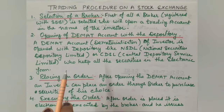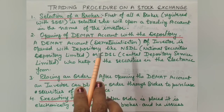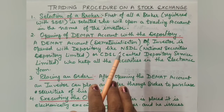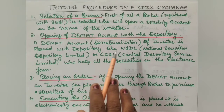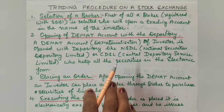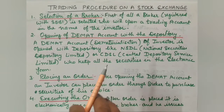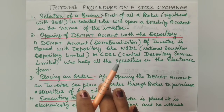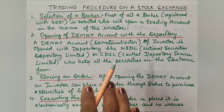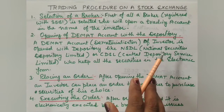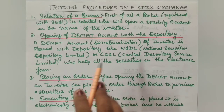Now we discuss the procedure of trading. First of all, selection of a broker. A broker is registered with SEBI and will open a trading account in the name of the investor. The broker can be an individual, a company, or an organization which works for brokerage. You can't invest directly — you have to approach the broker. He will open a trading account in your name and then the procedure follows.